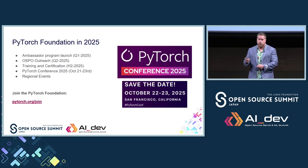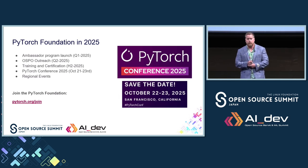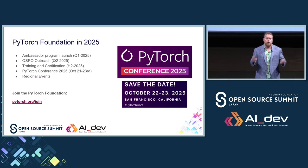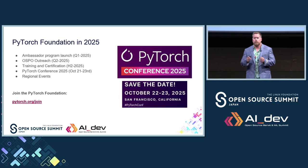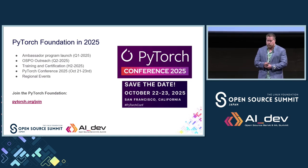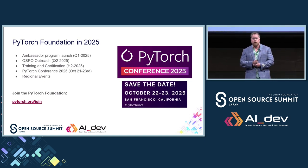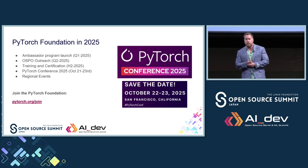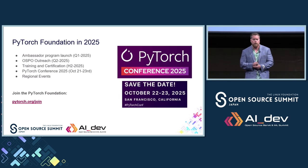The PyTorch conference will take place in October of next year in San Francisco. It's a great opportunity to network, get involved in the global community, and learn more about the state of the art in AI innovations. If your company is interested in joining the PyTorch Foundation, please reach out or visit PyTorch.org/join and apply as a member.